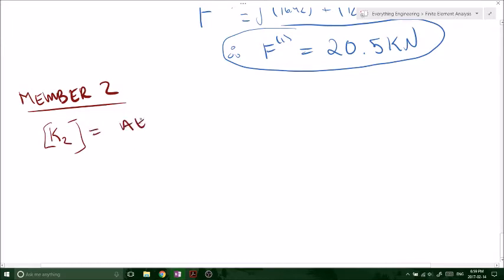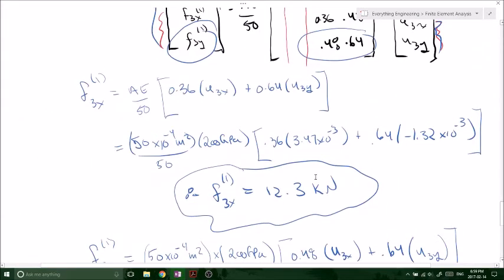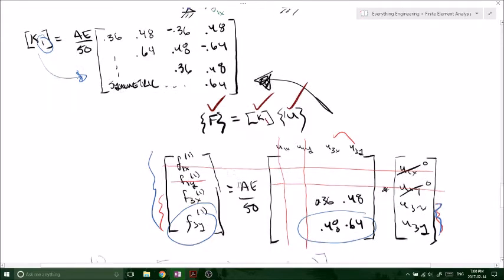K2 equals to AE over 50. It was the same length. And our K2, if we look back at the original problem that we solved above, remember this is symmetric, so I don't need to do that out. So this is our K2, right? Exactly the same thing as we did up here. We set our force vector equal to our K, that was K1, times our U.